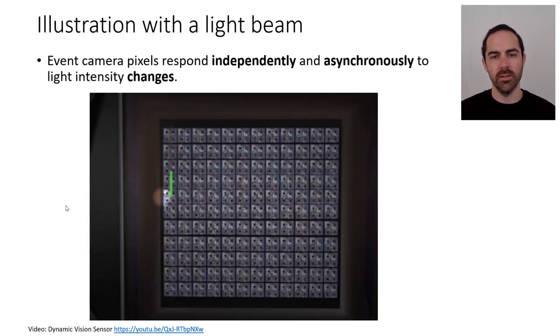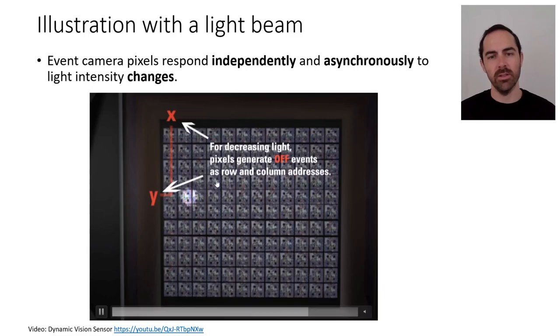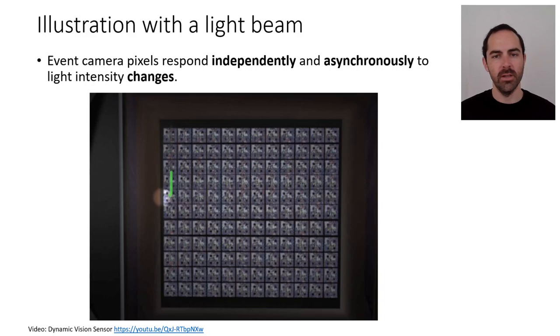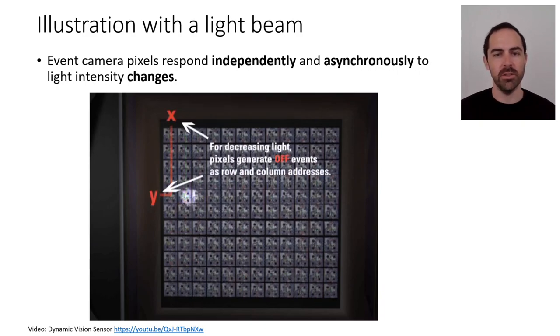So let's see it again: one pixel, on event because light increased, then light decreased at that pixel and the neighboring light increased. Therefore we see this transmission of the events. So that's what it means that the pixels that are informative are the ones that are transmitting data.